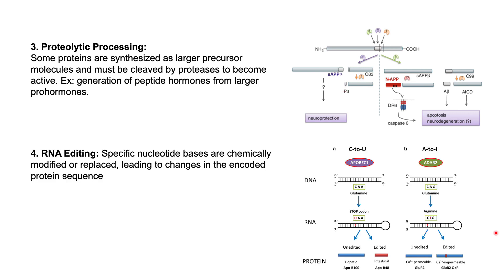The next mechanism is RNA editing. In some cases, RNA molecules can undergo editing where specific nucleotide bases are chemically modified or replaced, leading to changes in the encoded protein sequence. RNA editing is particularly common in the nervous system and can result in altered protein functions — for example, C-to-U editing and A-to-I editing.